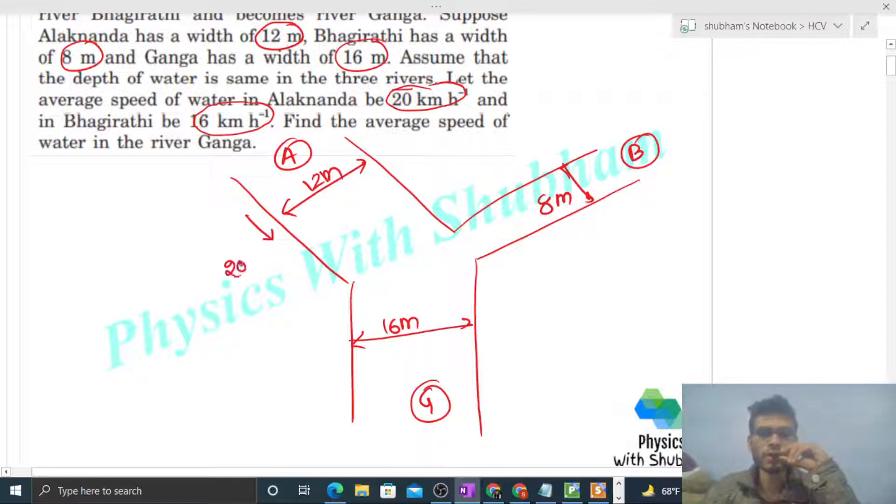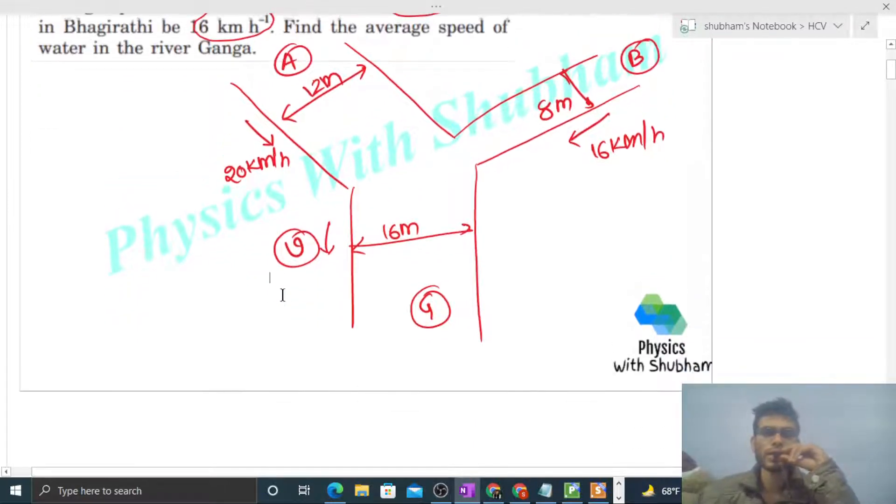Average speed of water is also given. For Alaknanda it is 20 kilometers per hour, for Bhagirathi it is 16 kilometers per hour, and for river Ganga we have to find out. So let's say v is the average speed of water in river Ganga.